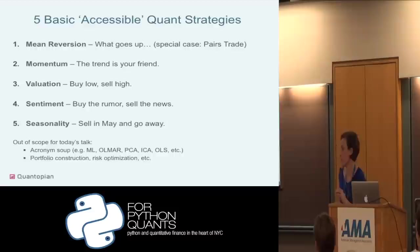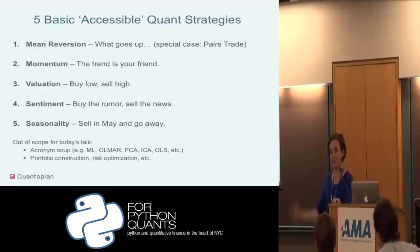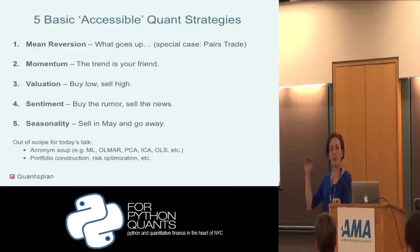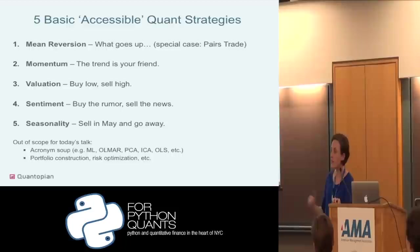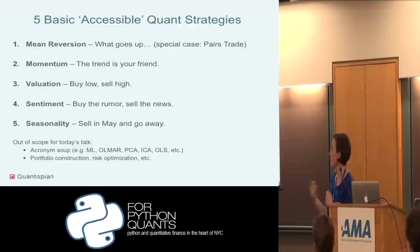The five basic strategies I want to cover are: mean reversion, momentum, valuation, sentiment, and seasonality. For mean reversion, the idea is a company trading at $12 should be $10 and will come back down. For momentum, it's the opposite — it could keep going up because that trend continues. A lot of basic quant strategies are built on the interplay and tuning of time horizons of mean reversion and momentum. These two are really common on our platform because all the data you need is price data.